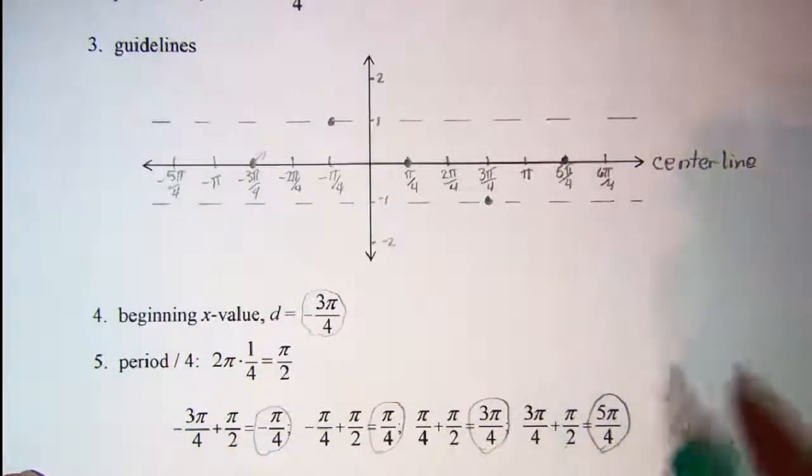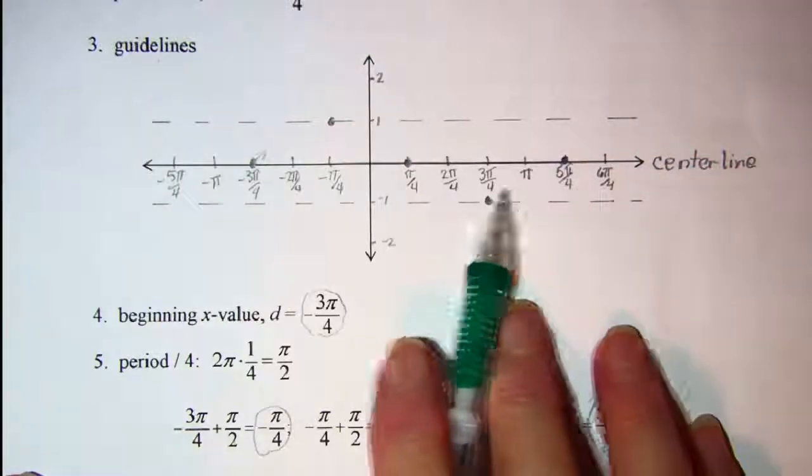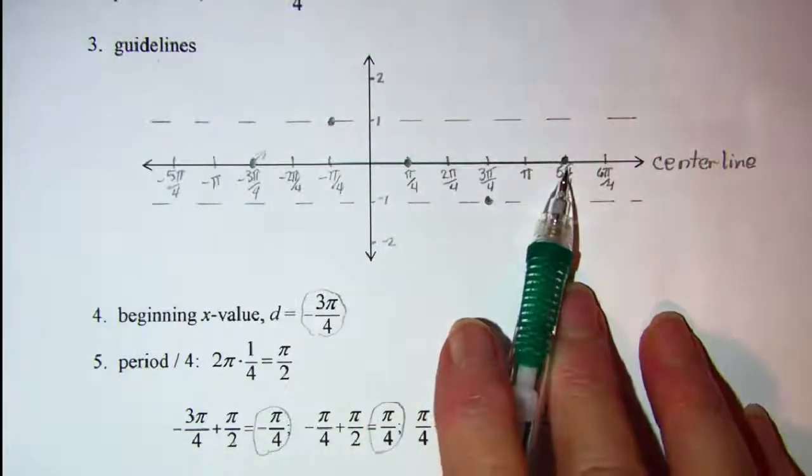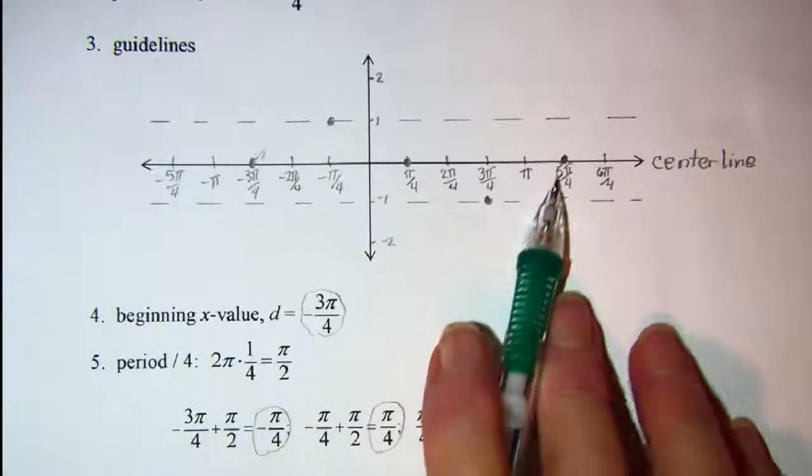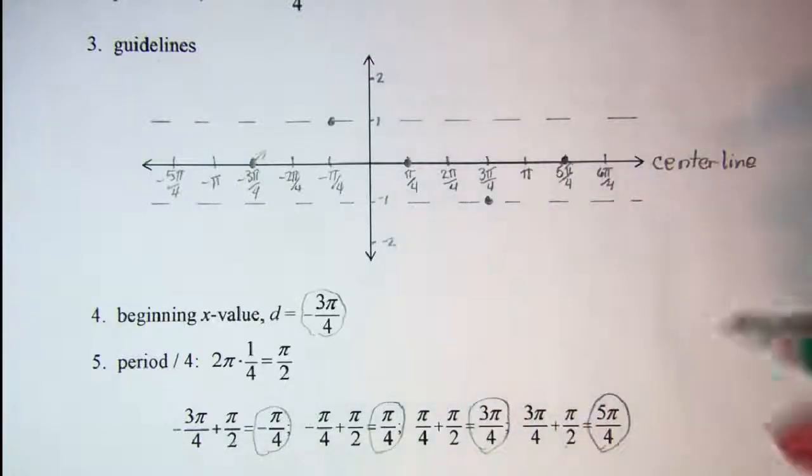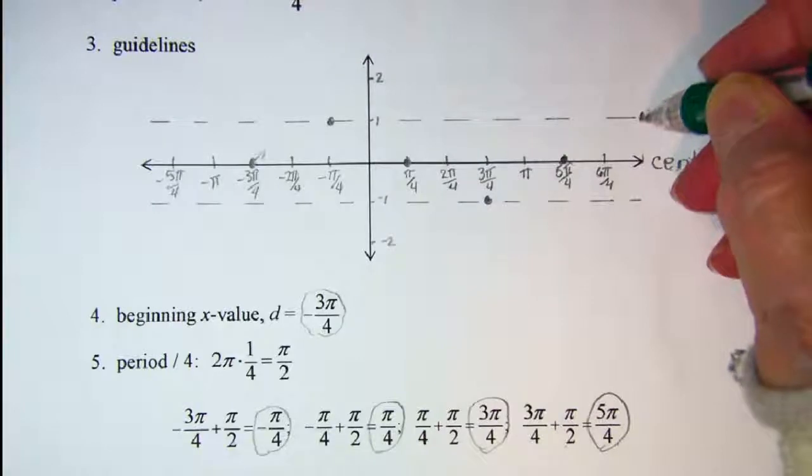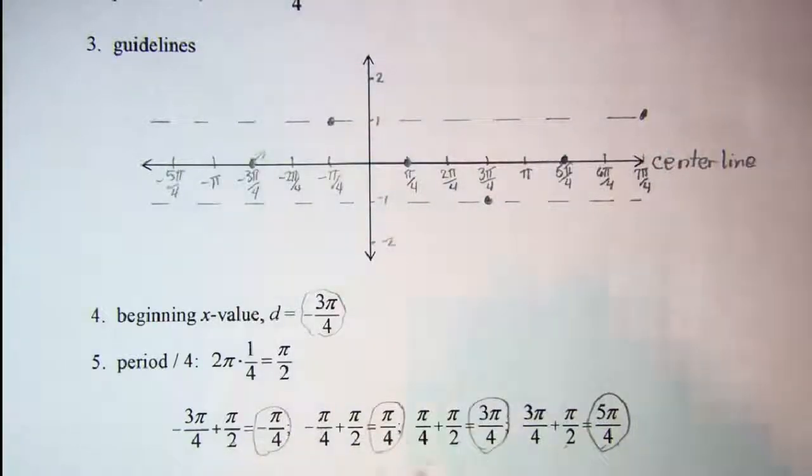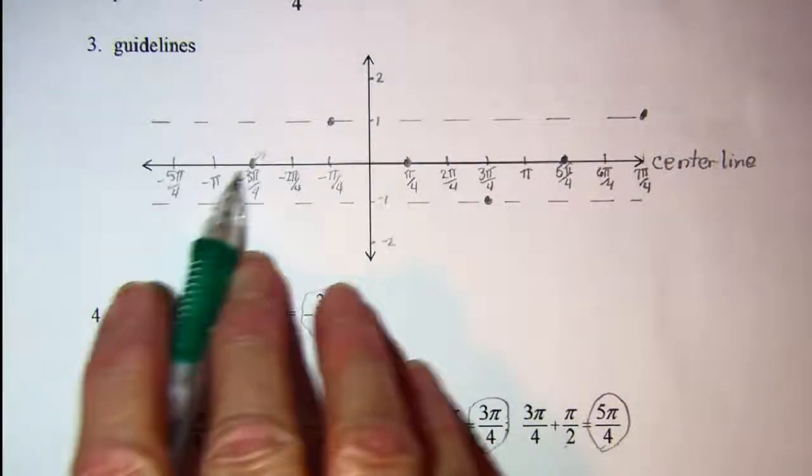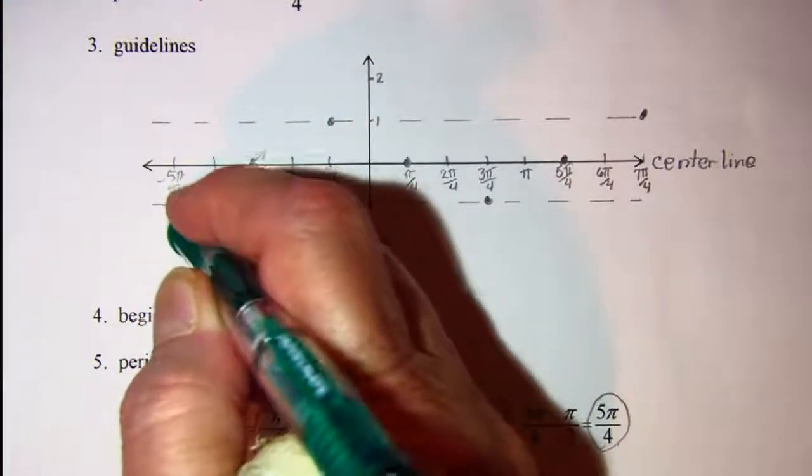Now if I wanted to extend it any further, looks like I have 2 pi over 4 in between my min here and my center line. So I would hit a max at 7 pi over 4, and I would hit a minimum value at negative 5 pi over 4.